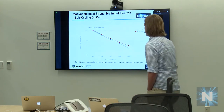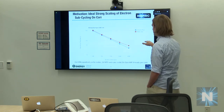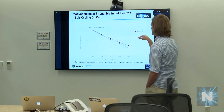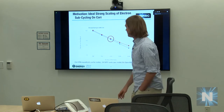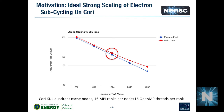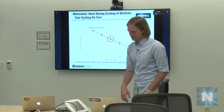Looking at strong scaling on Cori, the electron push (blue curve) scales almost perfectly and the main code slows down a little bit when scaled up. Essentially, the electron push is using the majority of compute time, and if you can make it run fast on one node, it will run fast on as many nodes as you like.